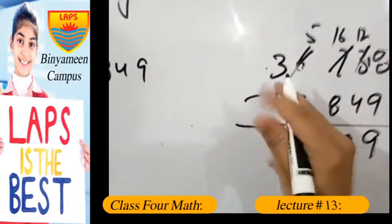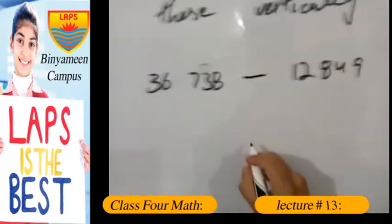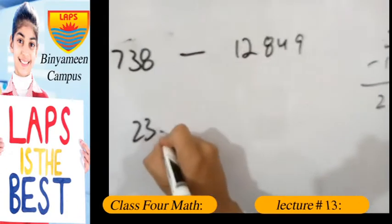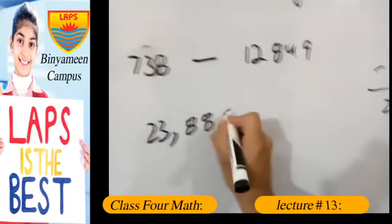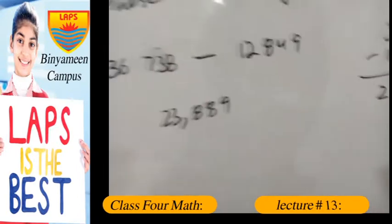For this value here, if we minus 1 from 3, we get 2. So the answer we got here is 23,889. This part has five questions; one of them